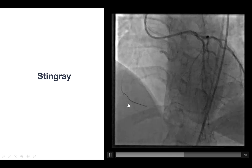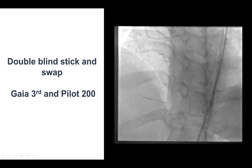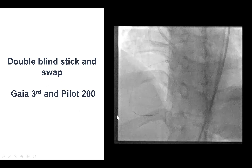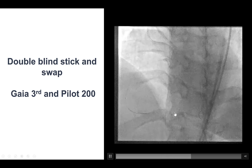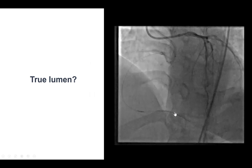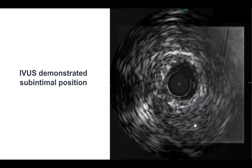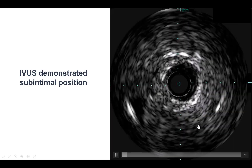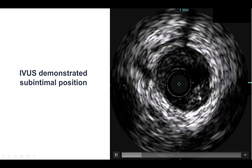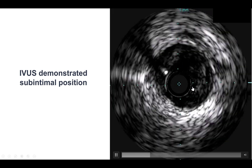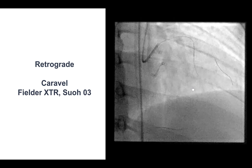We delivered a Stingray balloon to the distal RCA and did multiple re-entry attempts using the double-blind stick-and-swap technique with a Gaia 3rd and a Pilot 200, and the wire unfortunately seemed to be knuckling instead of freely moving distally. Eventually the wire moved more distally, but we were not fully satisfied with the movement of the guidewire, and IVUS was performed demonstrating a subintimal position of the guidewire. As a result, we decided to change to retrograde.